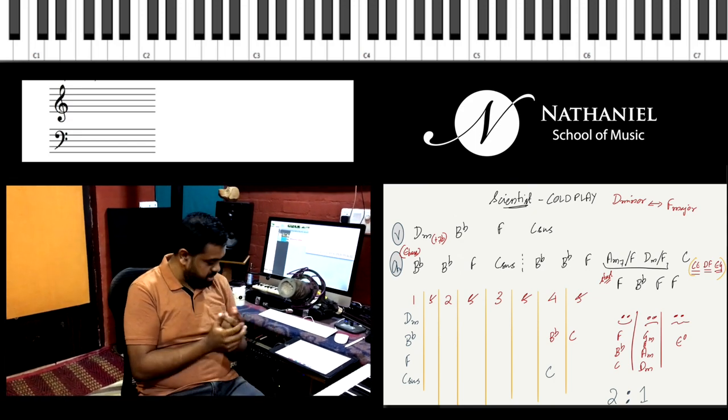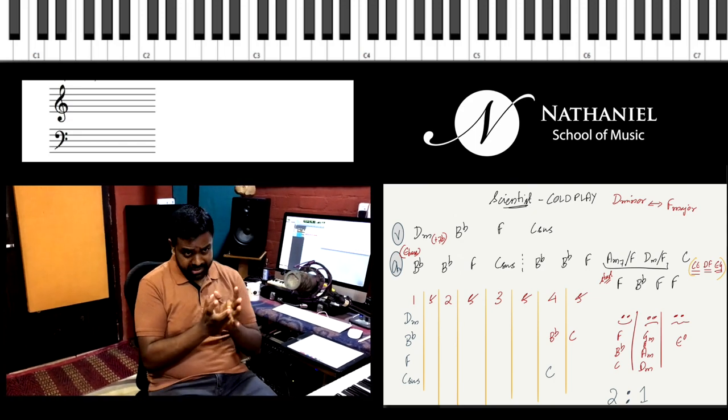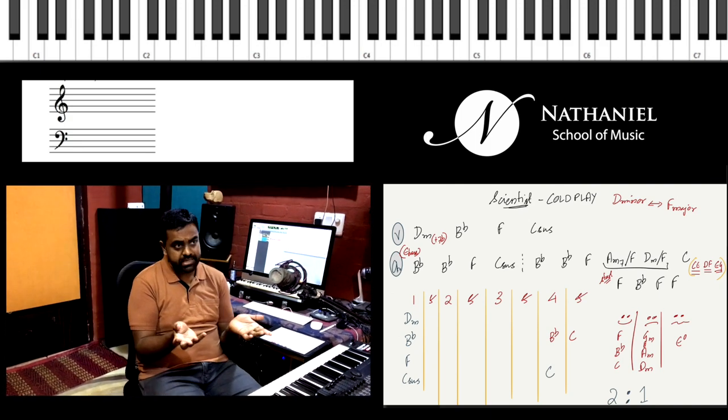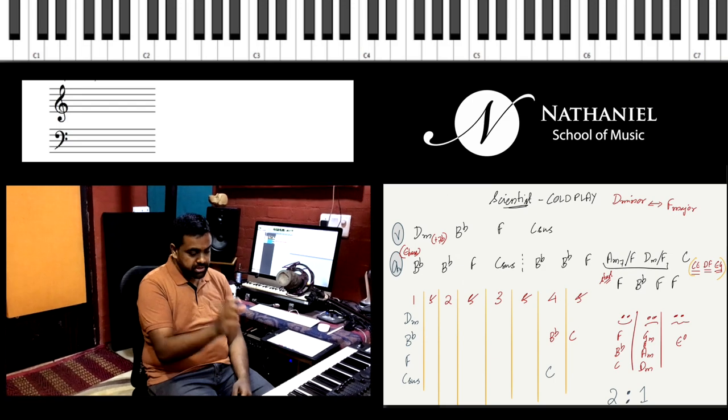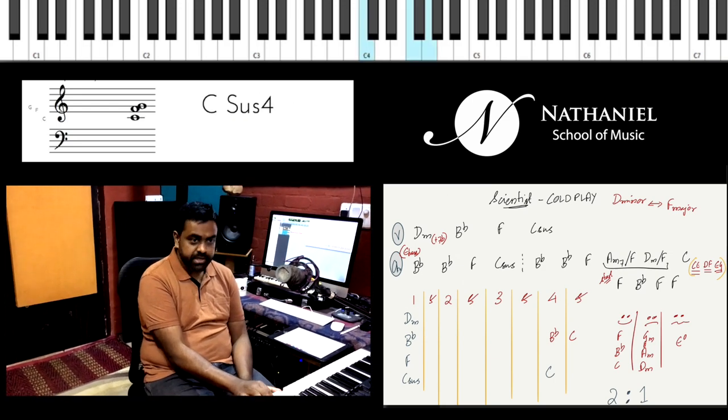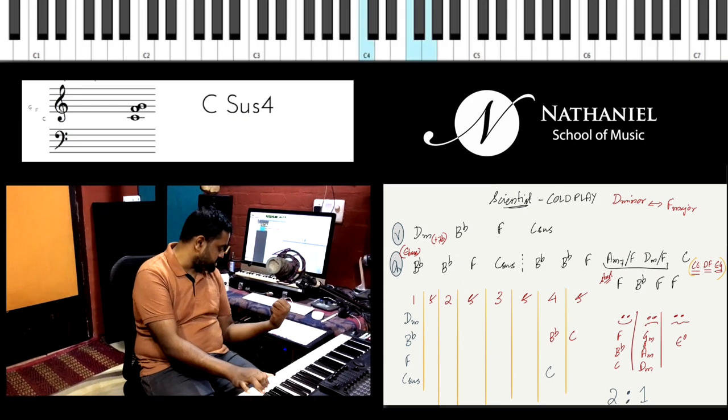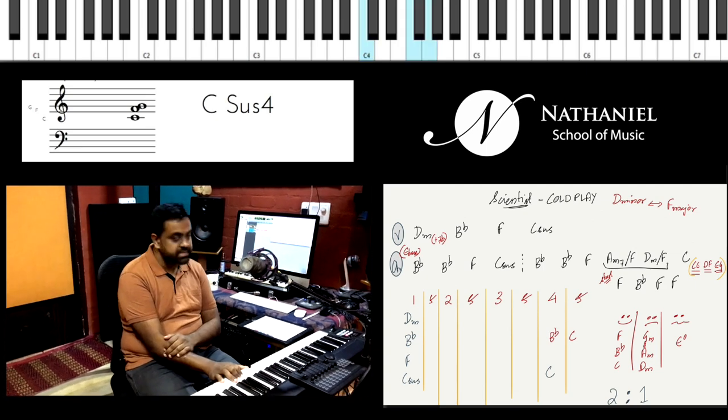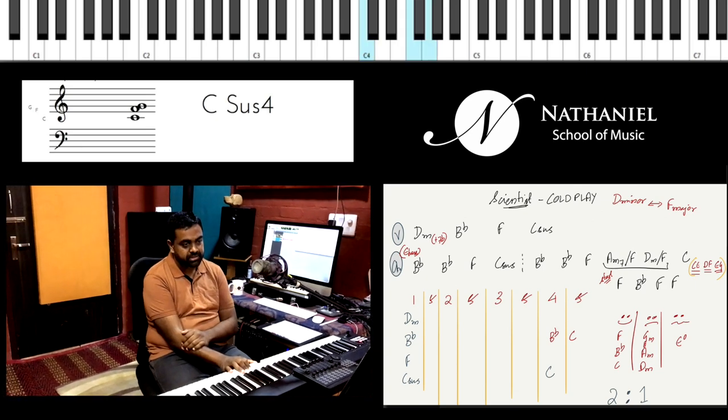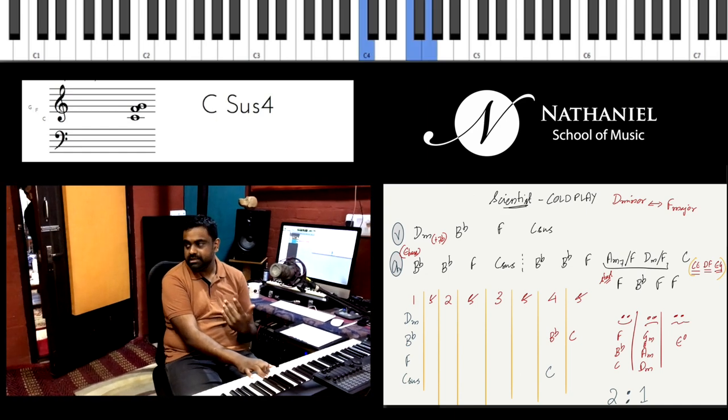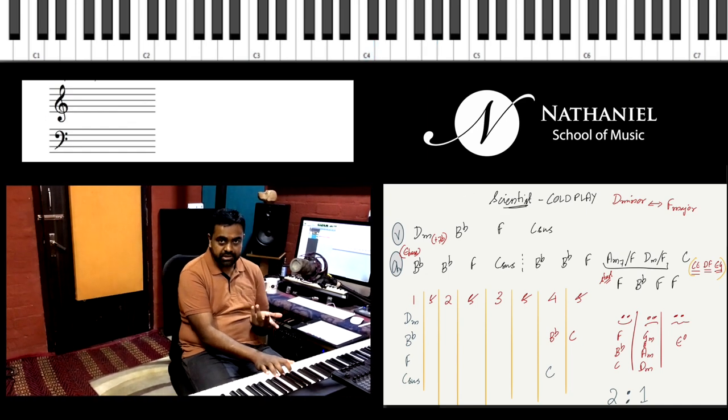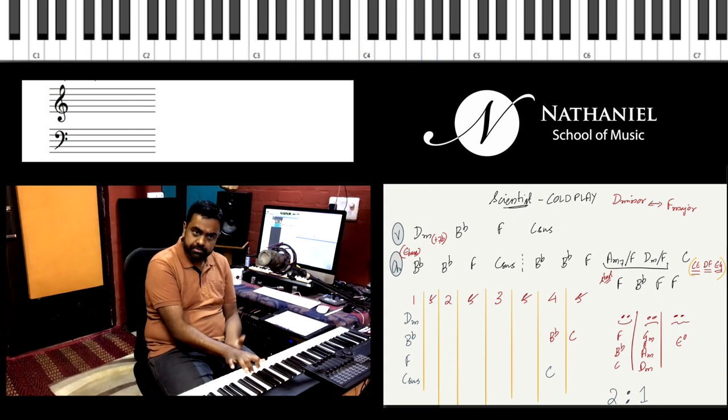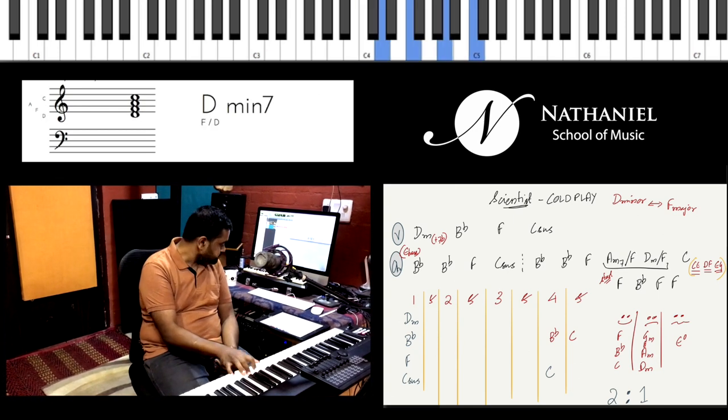And there are some chords which you may not have heard before or learned before. One is the suspended chord, which is the root, the perfect 4th, and the perfect 5th. Example, C sus 4, which is mentioned. And there's also things like the A minor 7th or the D minor 7th chord. A minor 7th chord is nothing but a minor chord with a flat 7 on the top or at the bottom, wherever you play it.